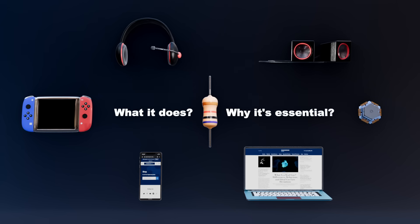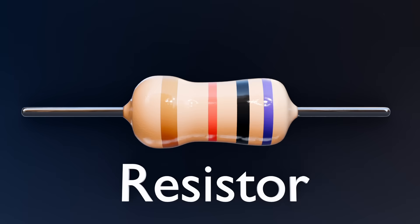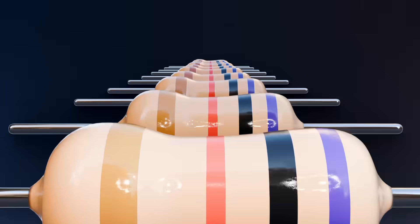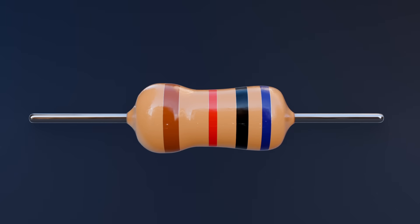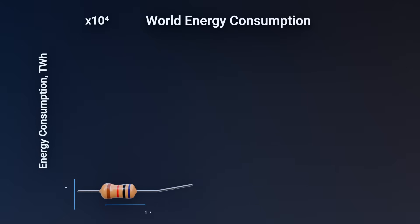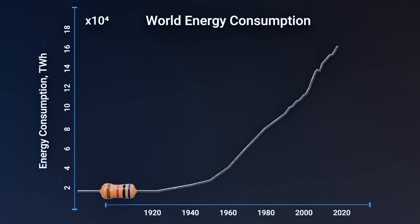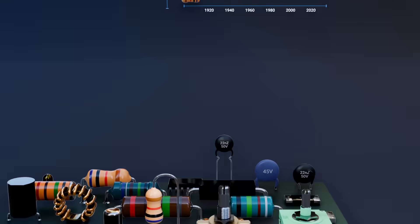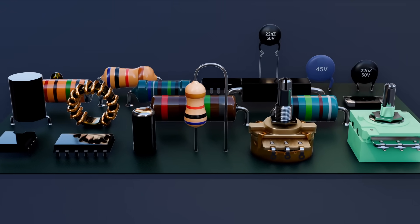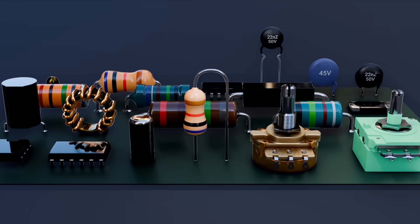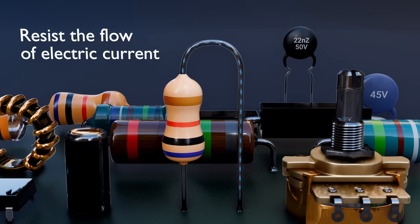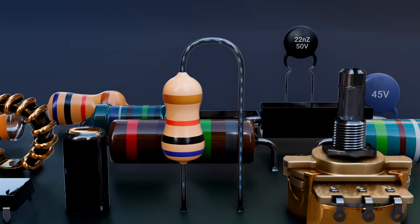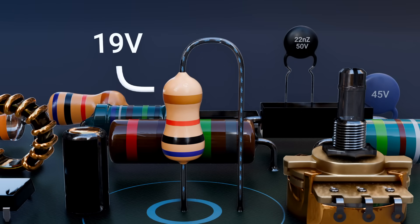Let's start with a bit of context. The resistor, as we know it, has been around for over a century. Its invention was driven by the need to control electrical current as our reliance on electricity grew. While resistors come in all shapes and sizes today, their purpose remains fundamentally unchanged: to resist the flow of electric current, and by doing so, manage the voltage and current in a circuit.